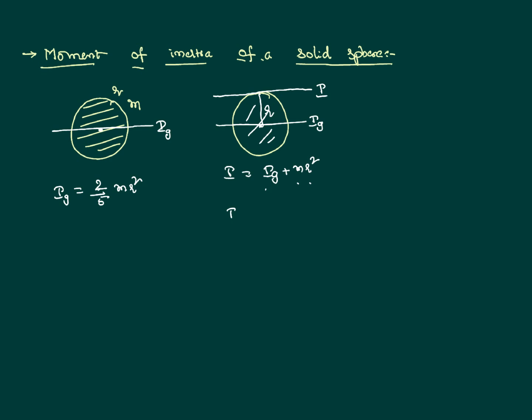Now we can calculate I. We know Ig from integration is 2/5 MR² plus MR². So it equals 7/5 MR². This is the moment of inertia of a solid sphere about an axis passing through the tangent of that solid sphere.